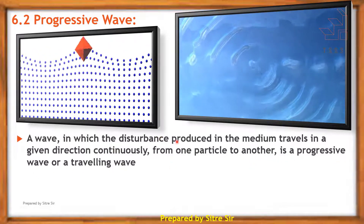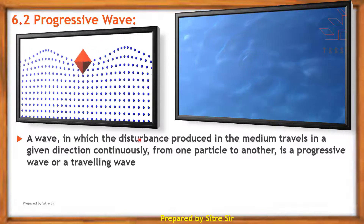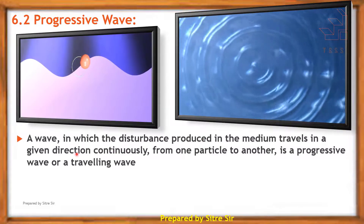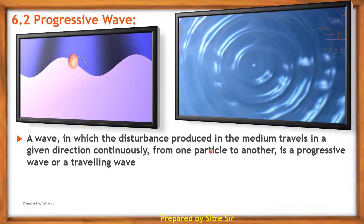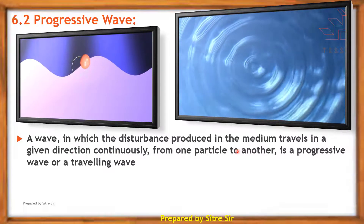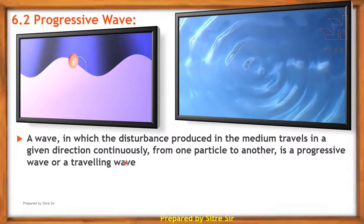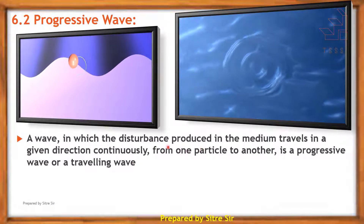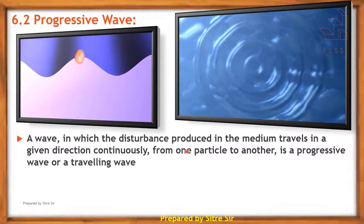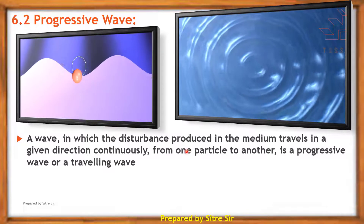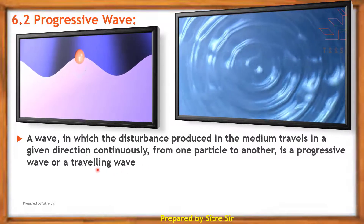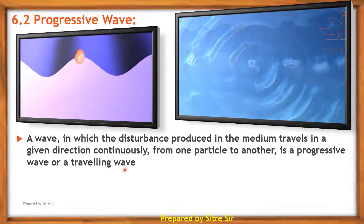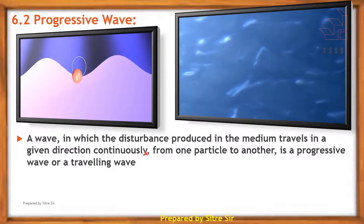If the disturbance is periodic and it travels continuously from one particle to another particle, this type of wave is known as a progressive wave or traveling wave.